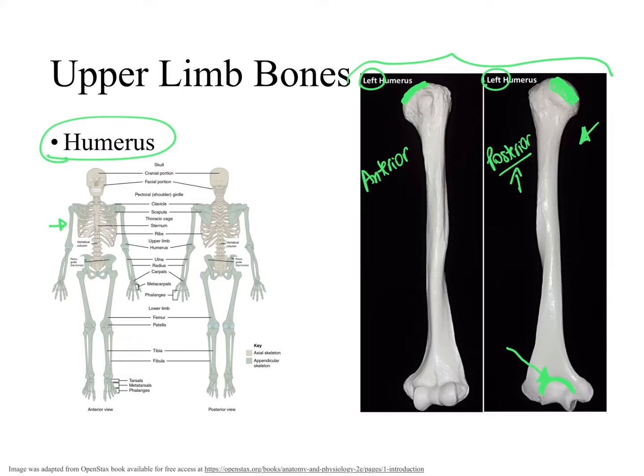When this articulation happens, we call it the glenohumeral joint. Underneath the head of the humerus, we have a neck. The humerus has two necks: the anatomical neck, right underneath the head, and the surgical neck located below that. The surgical neck is named because this is where people most commonly fracture the humerus and require surgery. So we have the anatomical neck and then the surgical neck.